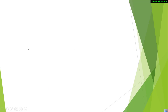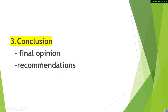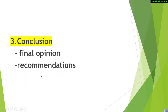For the conclusion, you give your final opinion. You can give your opinion throughout the article — in the introduction, in the body, and in the conclusion where you give your final opinion. You also include recommendations, which means you tell the reader whether the film is good to see or not, and whether to watch it or not.